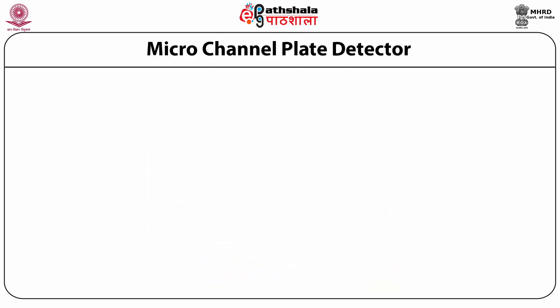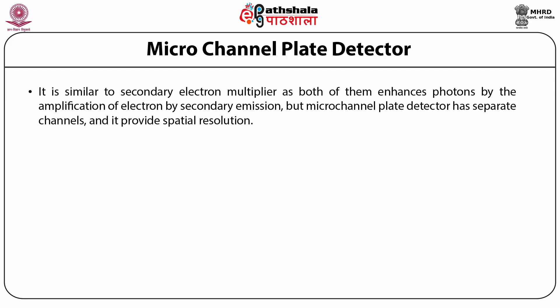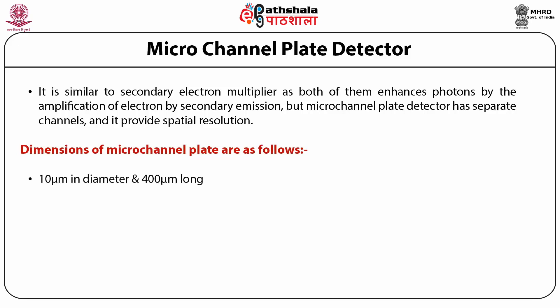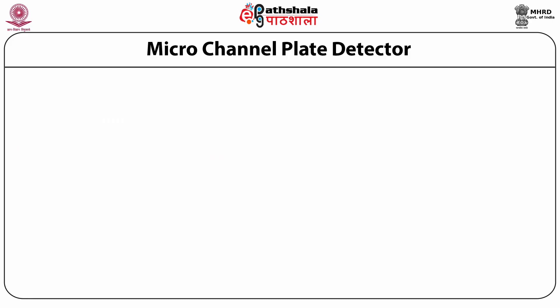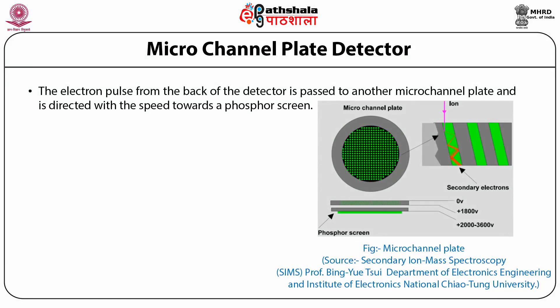The Micro Channel Plate Detector is similar to the secondary electron multiplier in that both enhance photons by the multiplication of electrons through secondary emission. However, the micro channel plate detector has separate channels and provides spatial resolution. Its dimensions are 10 micrometers in diameter and 400 micrometers long, angled at 7 degrees from the perpendicular to the surface plate, located at a 12-micrometer pitch. The electron pulse from the back of the detector is passed to another micro channel plate and directed towards a phosphor screen where it is detected.